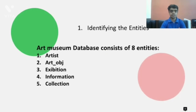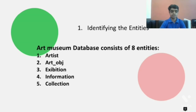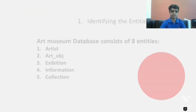Now let's continue with step one. Step one says we should identify entities. From our case study, we find out these entities. The first entity is artist, then art object, exhibition, and the fourth one is information, and the last one is collection.